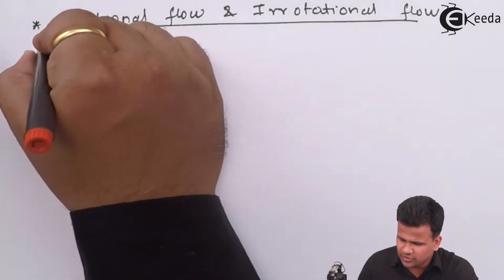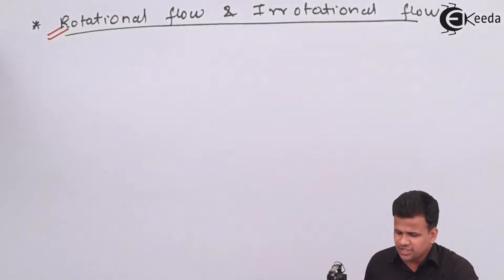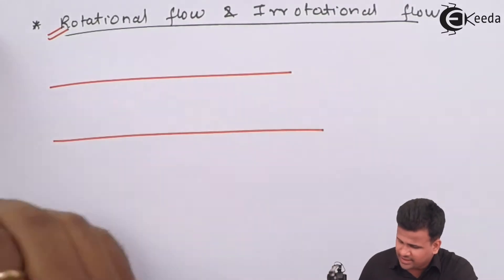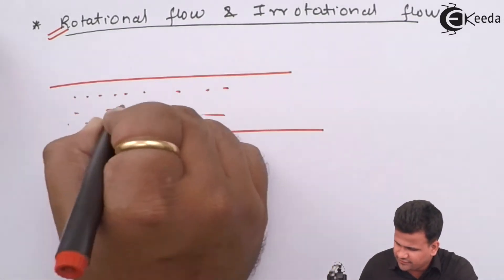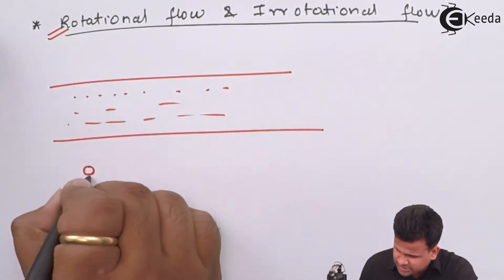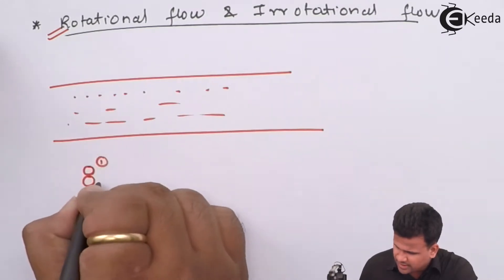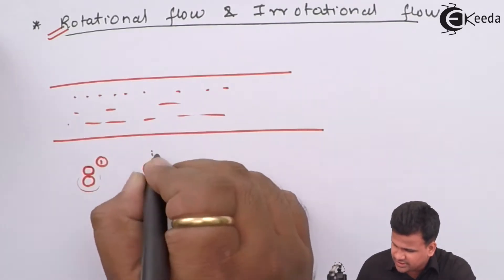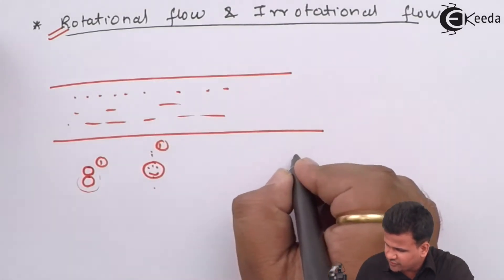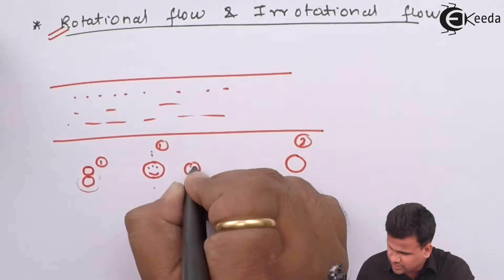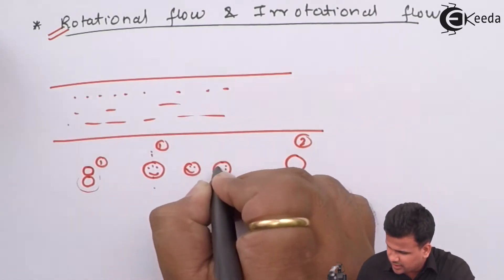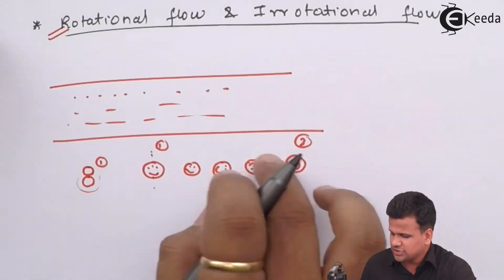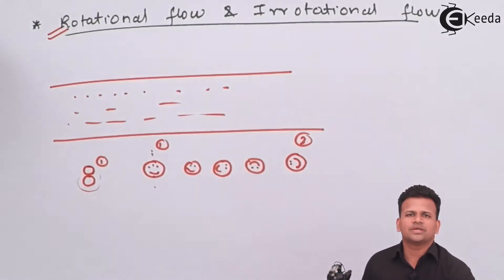What is rotational flow? Rotational flow is a flow in which, if a fluid is flowing and there are n number of molecules, one molecule rolls over another molecule. So while flowing from position one to position two, this molecule will actually rotate along its own axis. Due to this rotation along its own axis, the flow is called rotational flow.